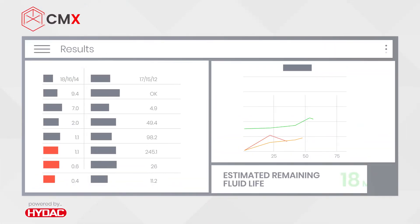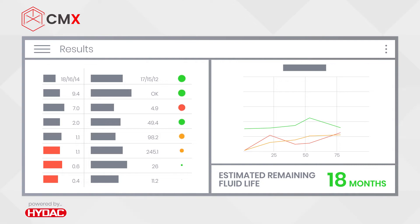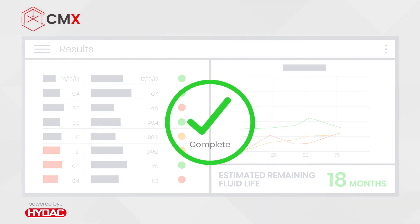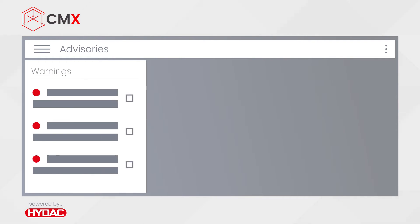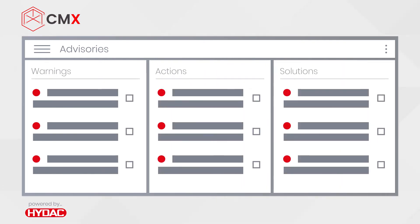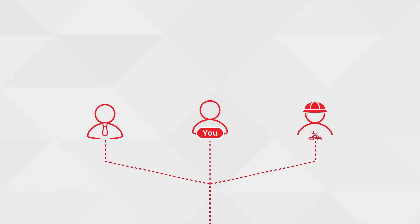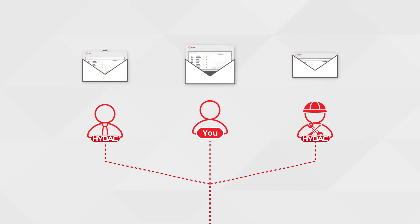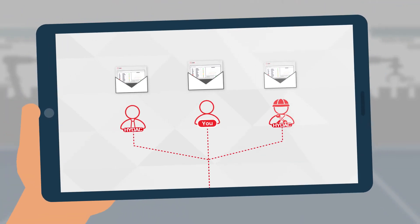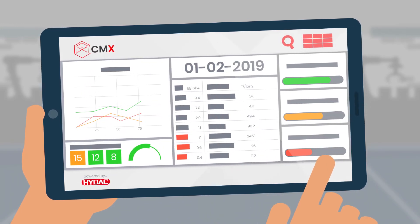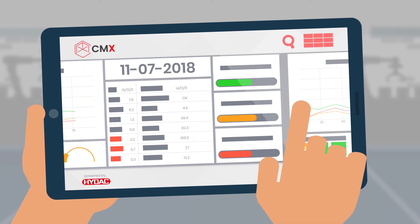Once the analysis is complete, the CMX laboratory portal will give a red, amber or green indication against each result, depending on whether they are close to or have exceeded the machine's acceptable limits. The sample is then marked as complete, and application-specific advisories are added, such as warnings, recommended actions and proposed solutions, which are ready to be implemented. This sets HiDAC apart from other oil analysis laboratories. The relevant contacts are then notified that their results and recommended advisories are ready to view online. Historic results will be available in a graphical format, so that fluid condition trends over time can be easily identified.